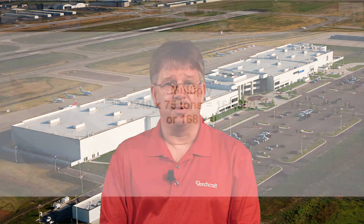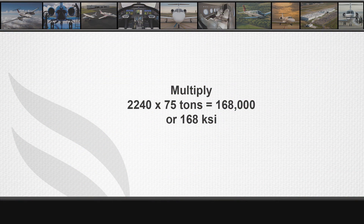So as a recap, a DHS-1473 bolt is an S98 material spec, and the SRM shows us that S98 is a 75 ton material. So we will multiply 2240 times 75 tons, which equals 168,000 KSI. Then we will look up the 168,000 KSI rating in a table in Chapter 20-09-20 to obtain the torque value for the specific application.